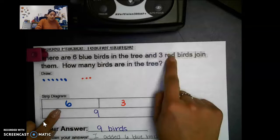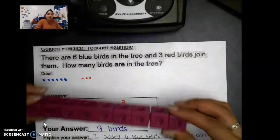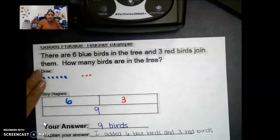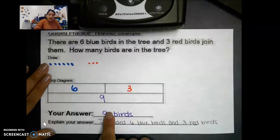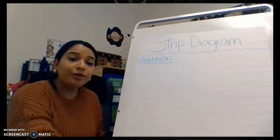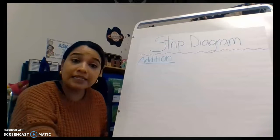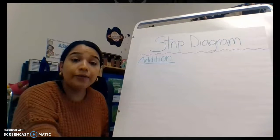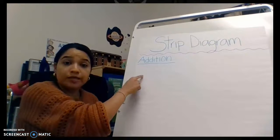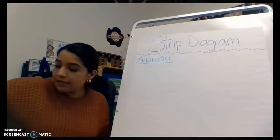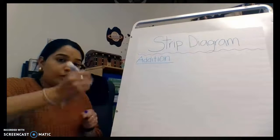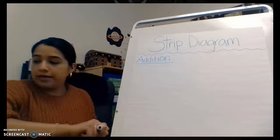We added six blue birds and three red birds to get our total — how many birds in the tree? Nine, we had nine birds. In our word problem we had six blue birds and three red birds, so let's draw our strip diagram on our anchor chart.